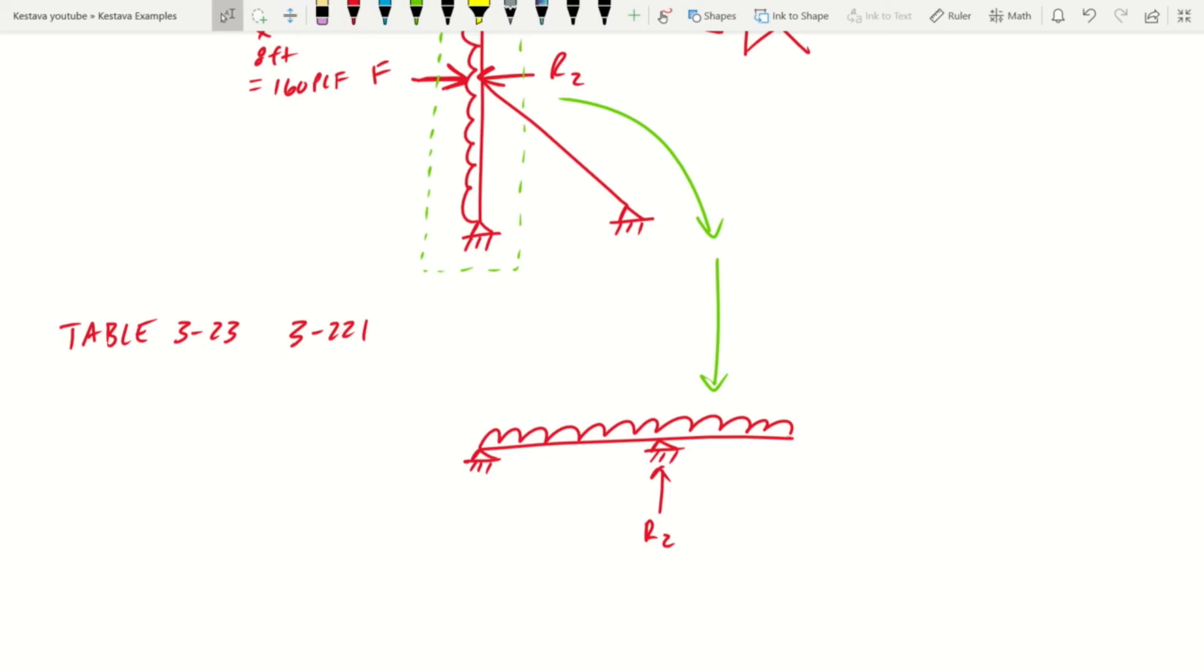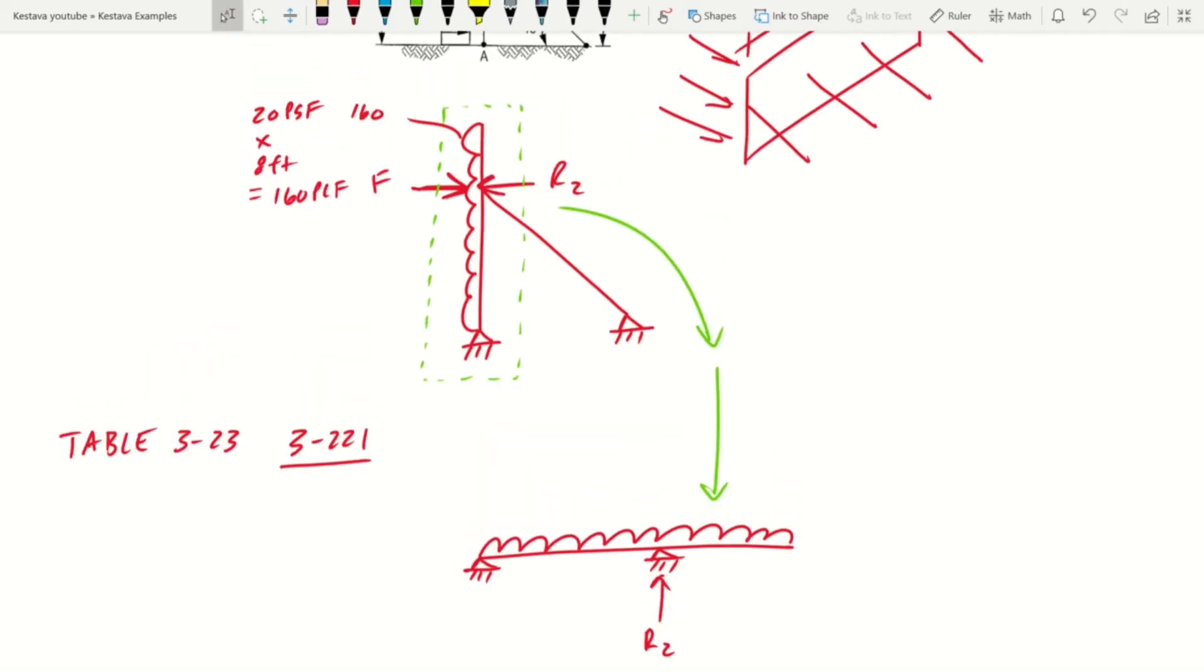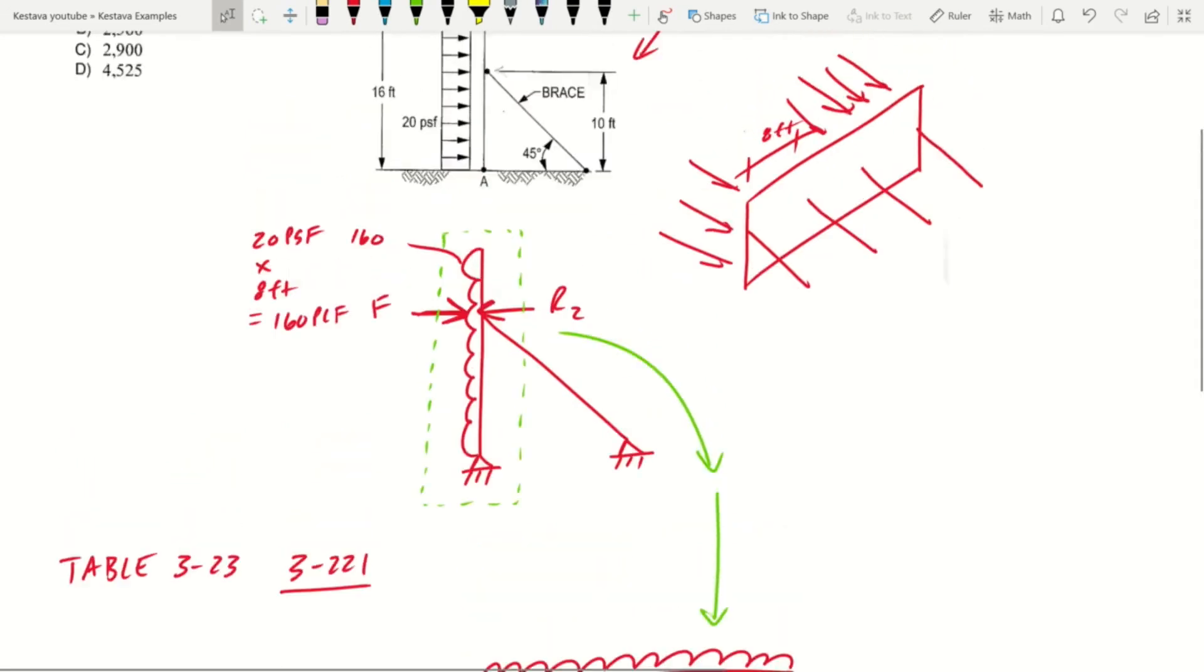And your R2 reaction is that reaction right there. So that equation is inside of the AISC steel manual on page 3-222 for that scenario. So that's what we're going to use to find our R2 reaction.